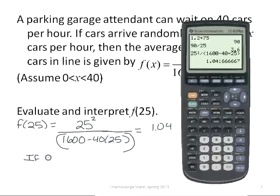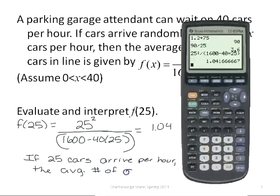Which means if 25 cars arrive per hour, the average number of cars waiting is 1.04, or about one car.